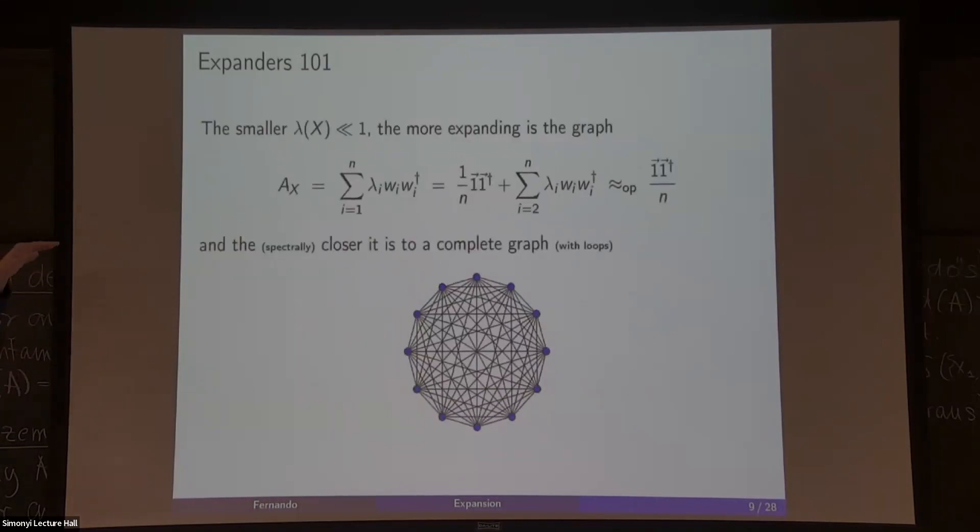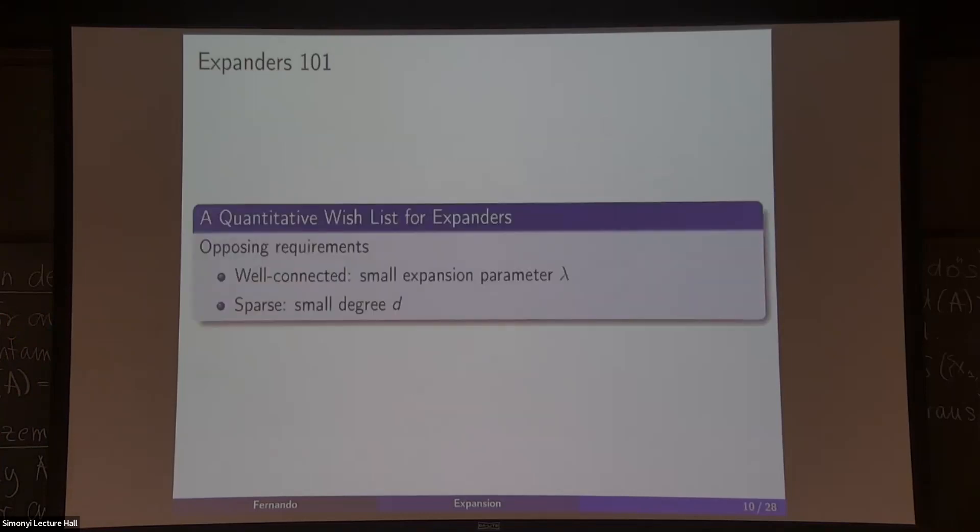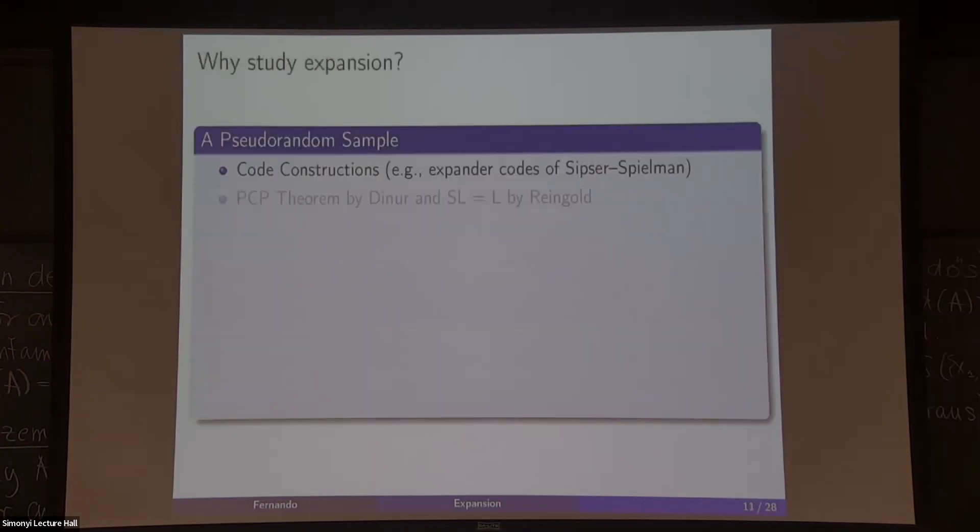Another way of seeing this: if you have the adjacency matrix, we single out the top eigenvector and you have the remaining parts. If this lambda parameter is small in terms of operator norms, our adjacency matrix is going to behave very similarly to this outer product one divided by n, which is essentially the adjacency matrix of a very dense, complete, well-connected graph. So we're trying to approximate in the spectral sense a very well-connected graph. We can make things more quantitative. We can ask this expansion parameter to be quite small, and the sparseness we are going to measure by the degree, so we want the degree to be quite small as well.